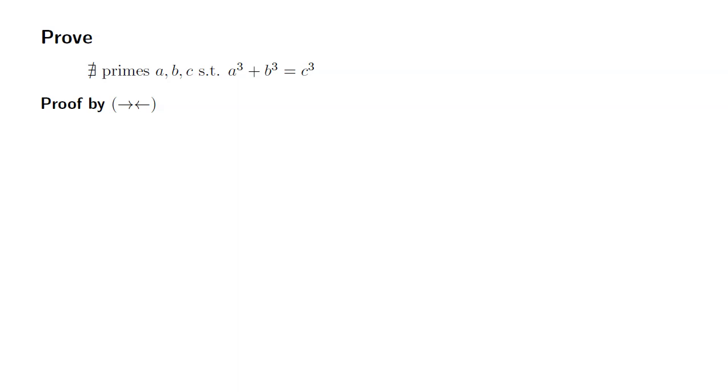Let's try to prove that there are no prime numbers a, b, and c such that a³ + b³ = c³.